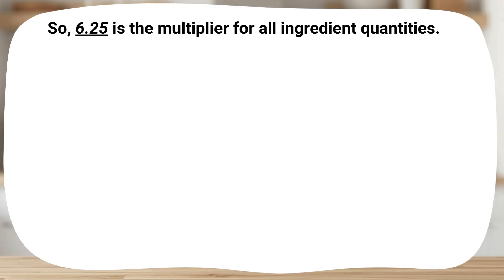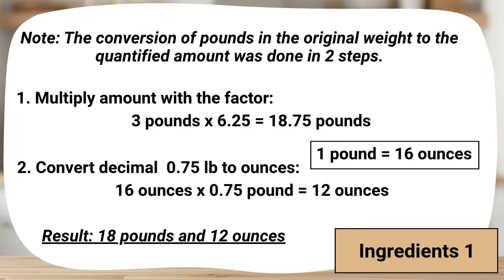6.25 is the multiplier for all ingredient quantities. The conversion of pounds in the original weight to the quantified amount is done in two steps. Step 1: Multiply by the conversion factor — multiply the original quantity by the factor to find the new total weight: 3 pounds × 6.25 = 18.75 pounds. Step 2: Convert decimal to ounces. Since there are 16 ounces in one pound, convert 0.75 into ounces: 0.75 × 16 = 12 ounces. Final answer is 18.75 pounds, or 18 pounds and 12 ounces.